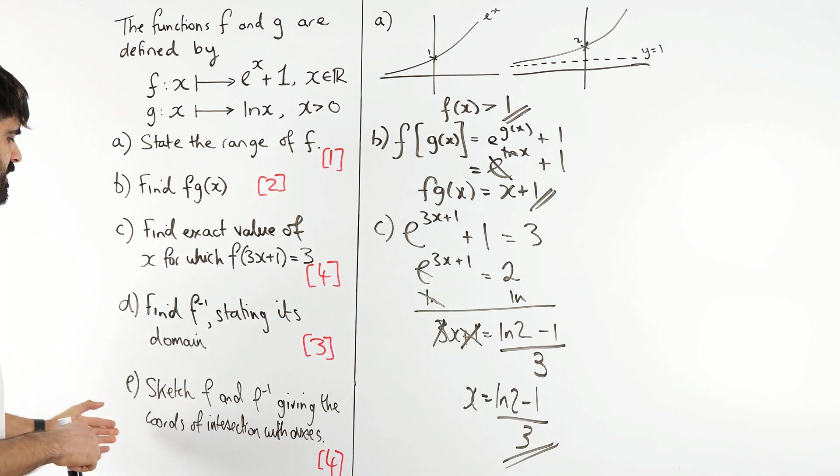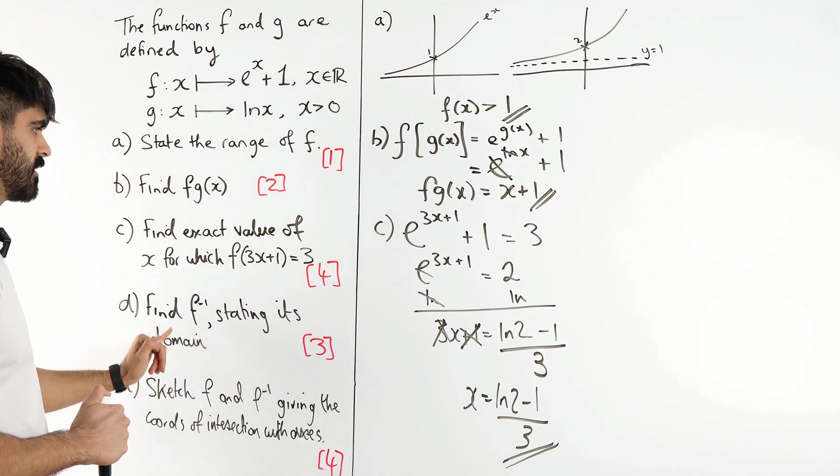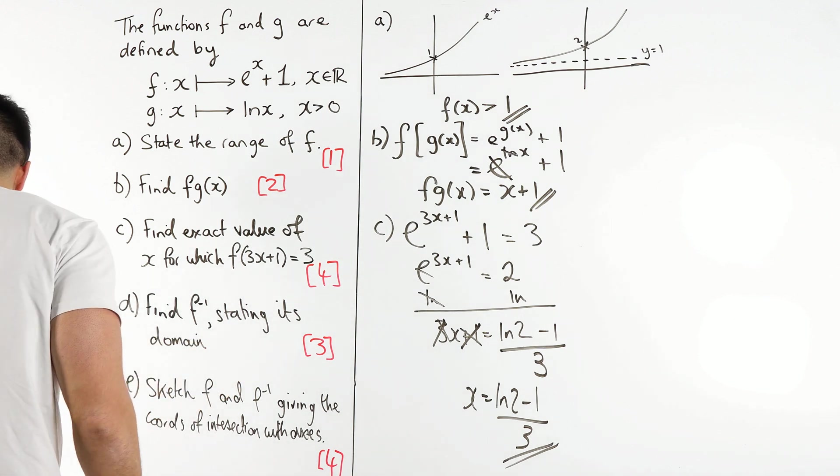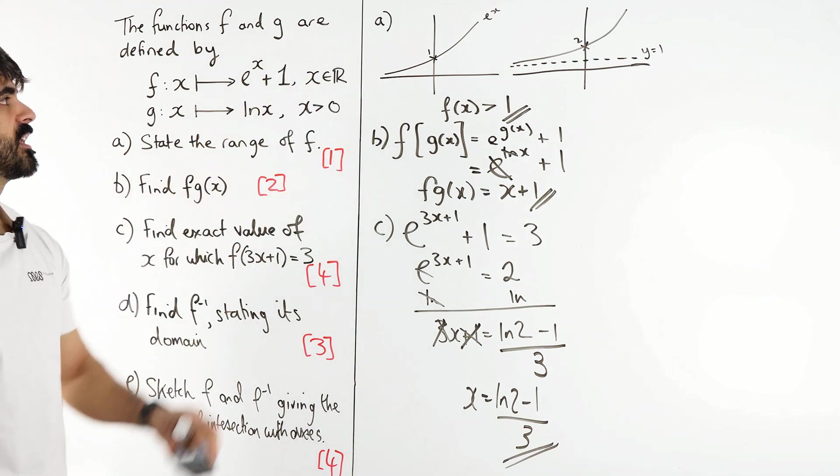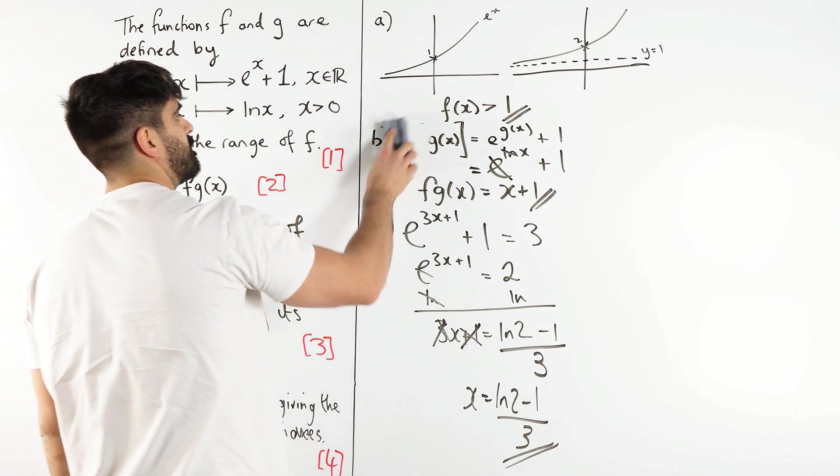Then part E is saying sketch f and the inverse. Oh wait, no. Let's not forget part D. Part E has asked us to sketch, so I'm actually going to leave part A there. But let's go ahead and do part D to find this inverse.